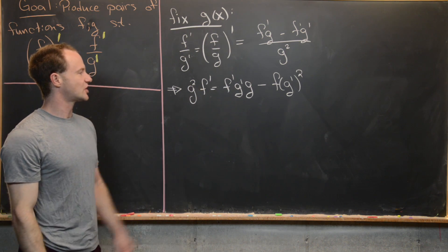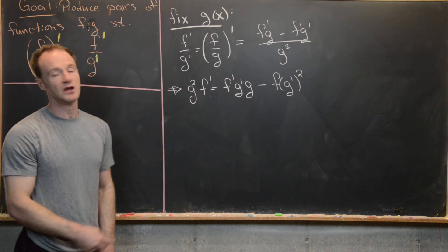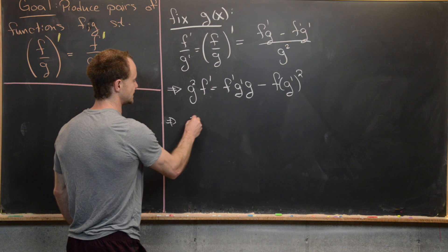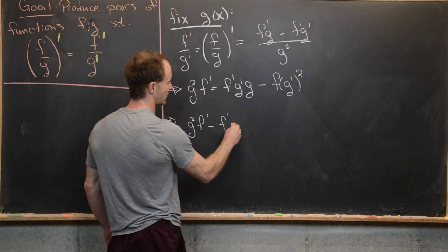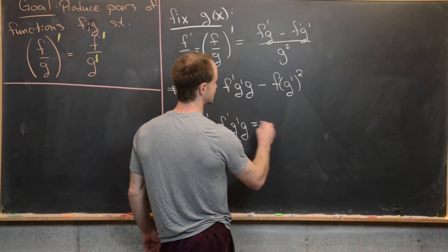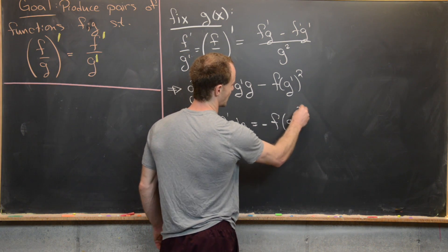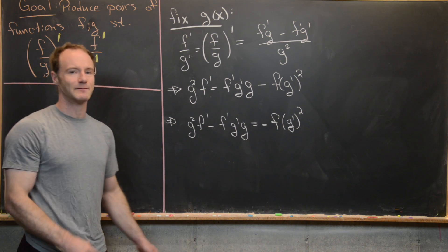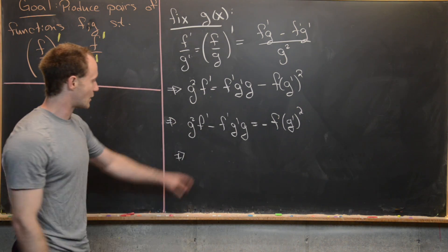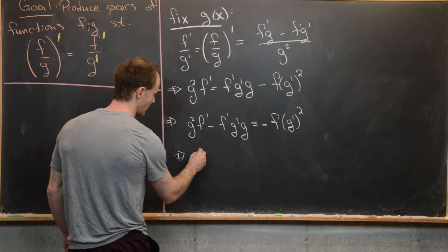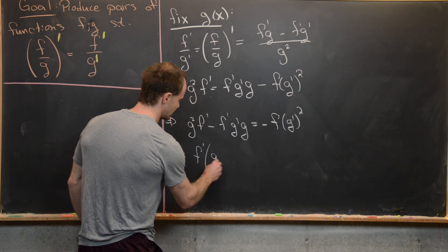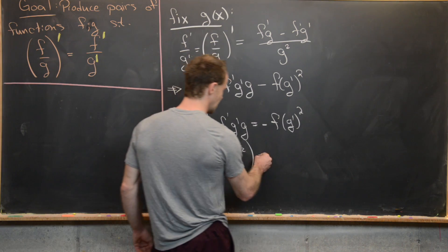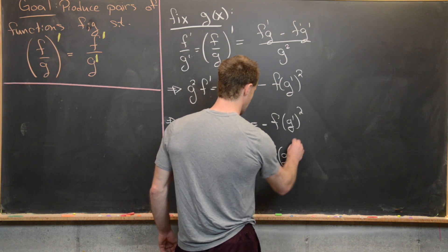This is turning into a separable differential equation for f. Moving terms around, we get g squared times f prime minus f prime times g prime times g equals negative f times g prime squared. Changing signs and factoring f prime out of the left-hand side, we get f prime times (g prime times g minus g squared) equals f times g prime squared.